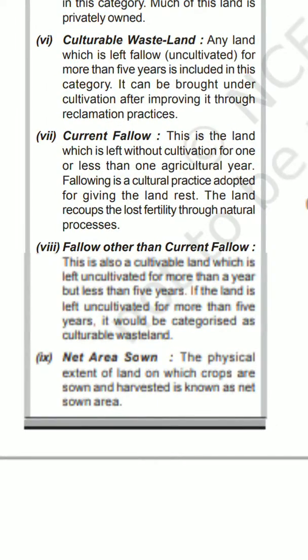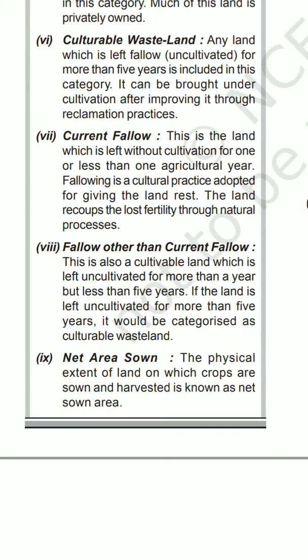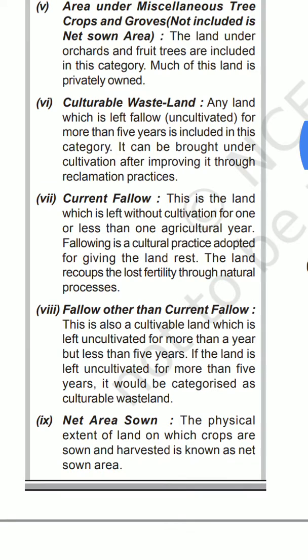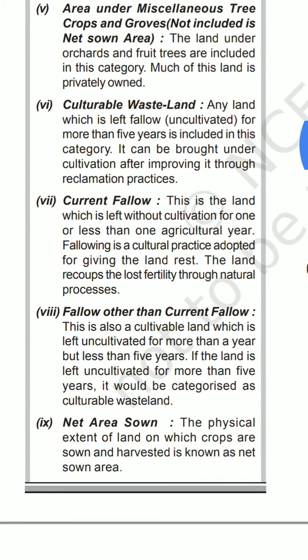The next term to concentrate on is 'fallow other than current fallow.' This is the area left without agriculture for more than one year but less than five years. So current fallow is zero to one year, fallow other than current fallow is one to five years, and more than five years is culturable wasteland.